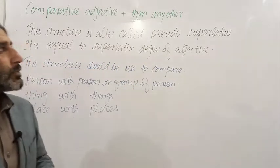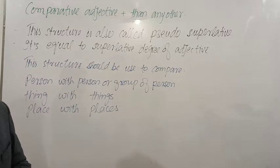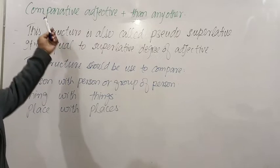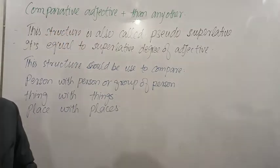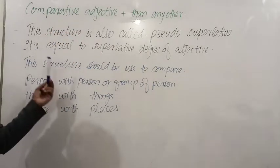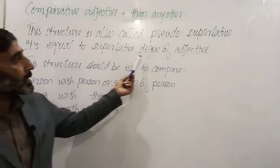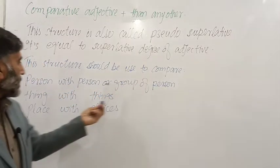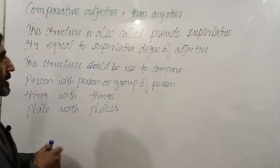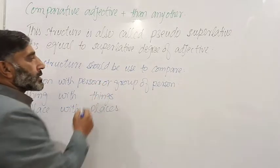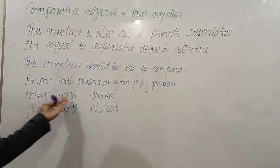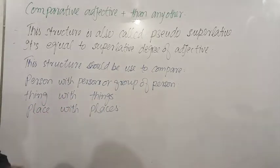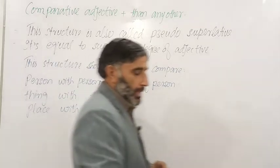This structure is also called CDU superlative — it is equal to the superlative degree of an adjective. Even though it uses the comparative form, it is equivalent in meaning to the superlative degree. This structure should be used to compare a person with a group of persons, similarly a thing with things, and a place with places.